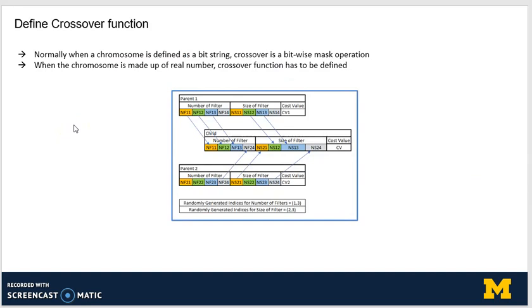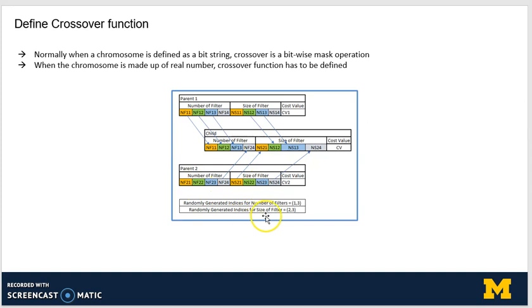In a normal genetic algorithm, a chromosome is defined as a bit string and crossover is a bitwise mask operation. However, in this case where the chromosome is defined in terms of real numbers, we have a dedicated function for crossover. A random index generator produces indices — say 1 to 3 for the number of filters — so elements 1 to 3 from parent 1 and the fourth element from parent 2 form the child. Similarly, for the size of filter, indices 2 to 3 come from parent 1 and the first and fourth elements come from parent 2. Based on this configuration, we then calculate the cost value.